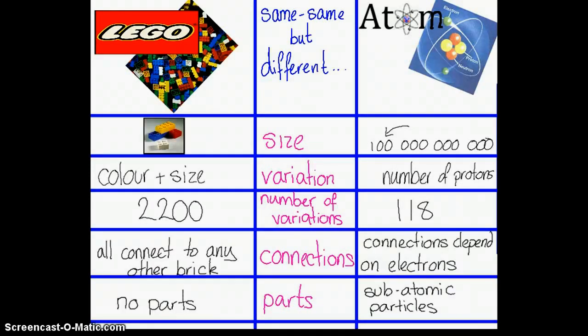Here's my go at completing the table. I can see that Lego bricks are different from each other by their colour and size, but it's the number of protons in an atom that makes atoms different from each other. I can see there are 2,200 different types of Lego block, but only 118 different types of atom that we know about.